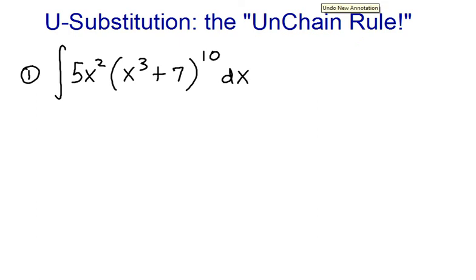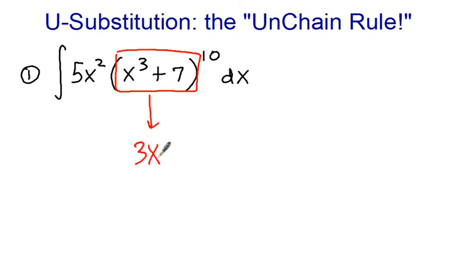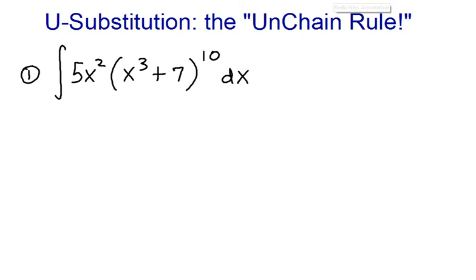So let's go ahead and start trying to do this anti-derivative problem. One thing to notice here is that if you were to take the derivative of this expression, you'd get 3x squared, which is kind of similar to this term out here except it says 5x squared. But there is an x squared component. So for that reason, I'm going to assign that quantity to be the variable u. So u is x cubed plus 7.